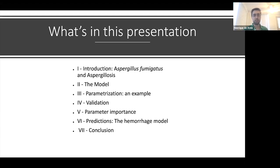This presentation will be divided into seven parts: a brief introduction about Aspergillus fumigatus and aspergillosis, an overview of the model, its parameterization with a case study, an example of how I got one of its critical parameters, validation study of parameters importance, some predictions where hemorrhage comes in, and a brief conclusion.